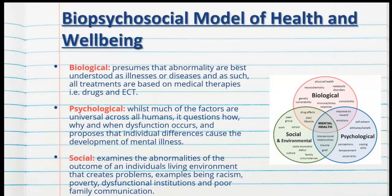Let's focus now on the biopsychosocial model of health and well-being. Looking at the biological perspective, it presumes that abnormalities are best understood as illnesses or diseases and as such all treatments are based on medical therapies. That includes things like prescribed medications and electroconvulsive therapy or electric shock therapy. When we look at the biological factors behind mental health and mental illness, we need to consider whether there is a biological or chemical cause or explanation for the mental health condition occurring, and what are the biological approaches to treat that illness.